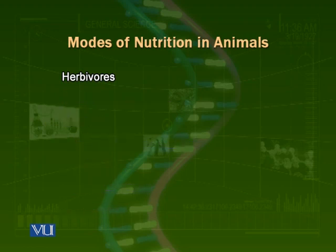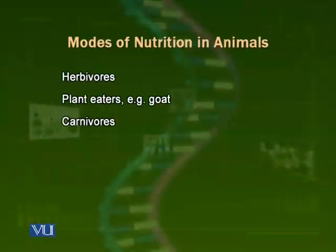Herbivores are those organisms which eat plants. For example, goats eat the leaves of different plants, buffalos eat grass, and cows also eat grass and plants. Herbivores acquire their energy or food from plants.